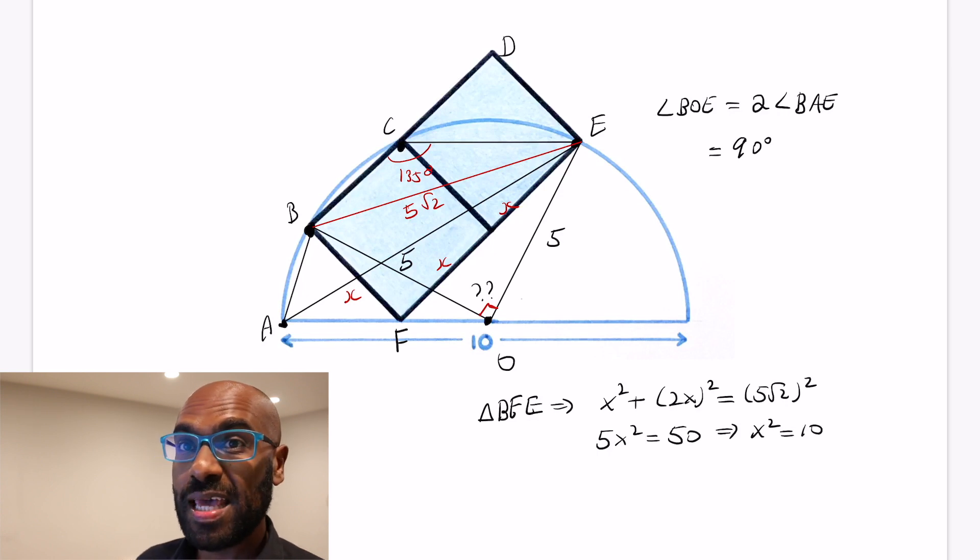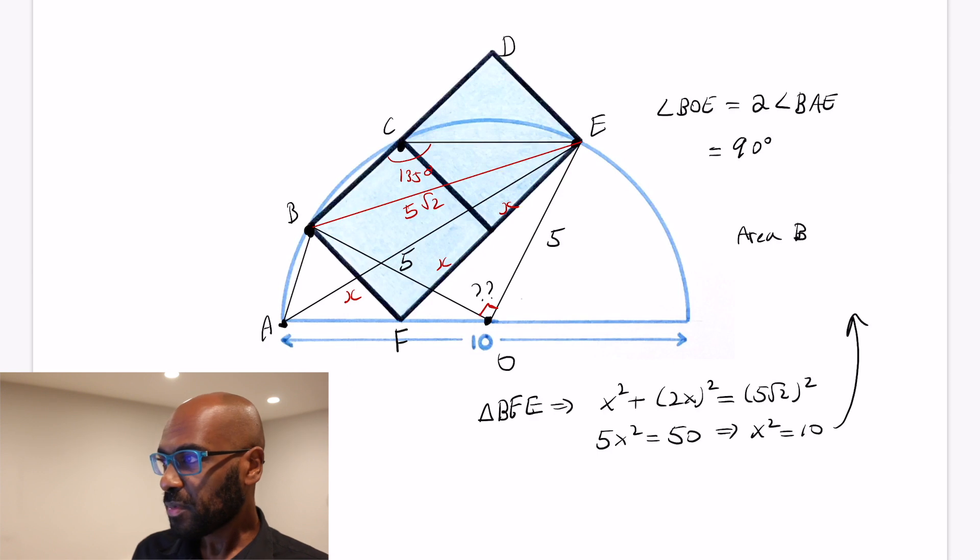And the thing we're interested in is the area of the entire rectangle. That's twice the area of the squares. So the area of the rectangle BDEF is 2 times X squared, which we figured out is 10. So it's 20 in total. Great.